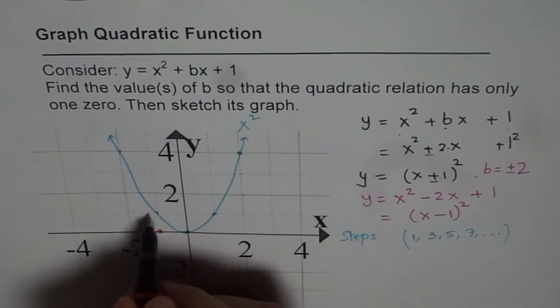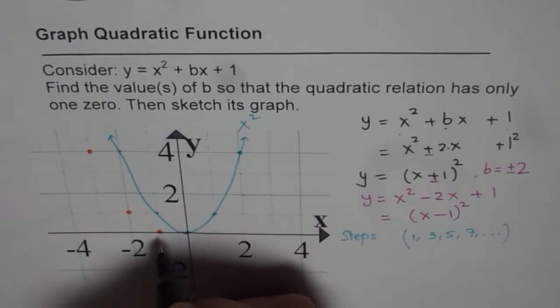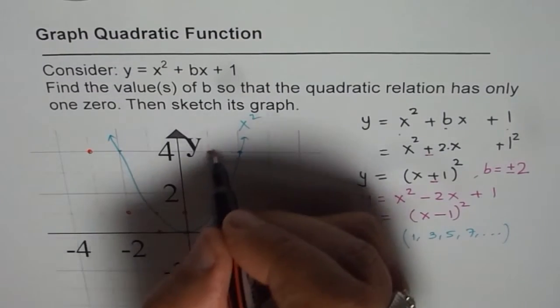So every point moves one unit left. And that is how we get our transformed function. So every point moves one unit left and we get our graph.